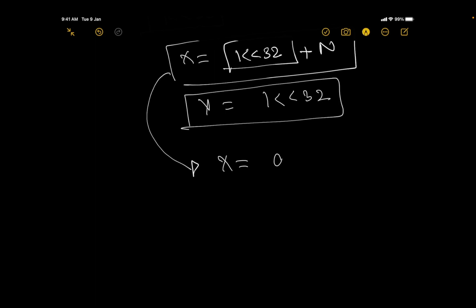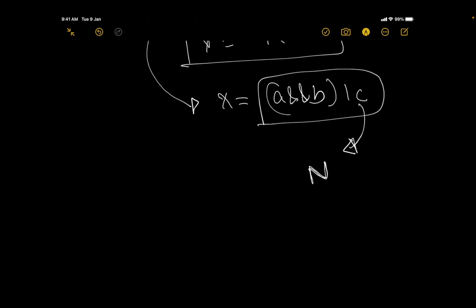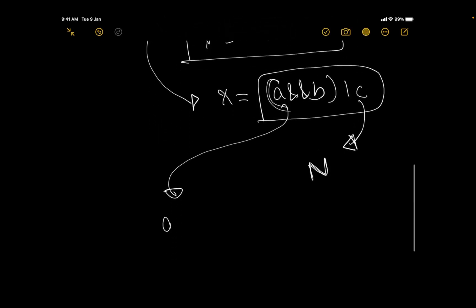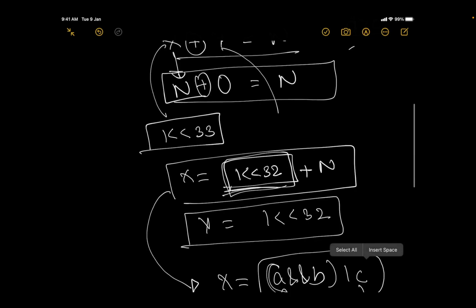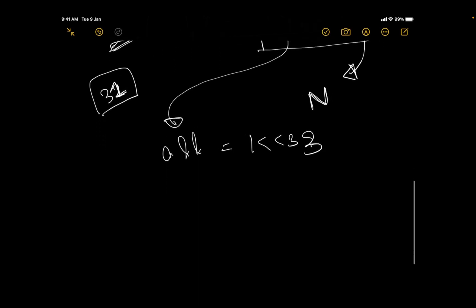Now x is actually equal to (a AND b) OR c. If I set c = n, then a AND b needs to equal 1<<33. I'll use a value of 1<<33 for the AND result. We need bits above position 31 since up to bit 31 could be set in n itself. So don't risk it — use values above bit 31.